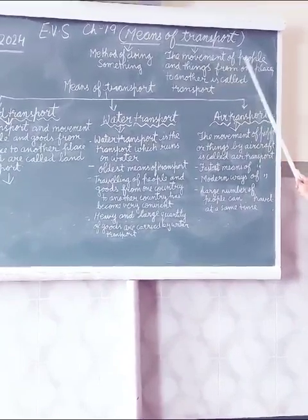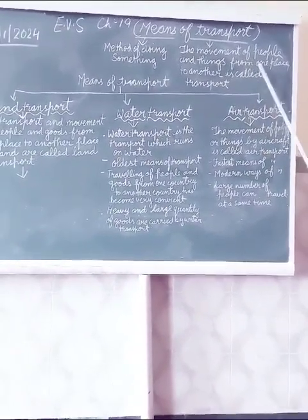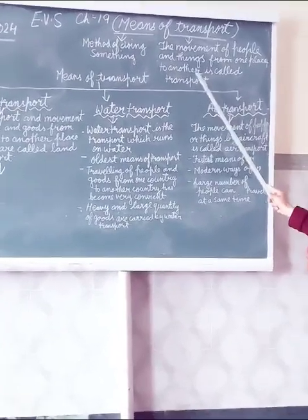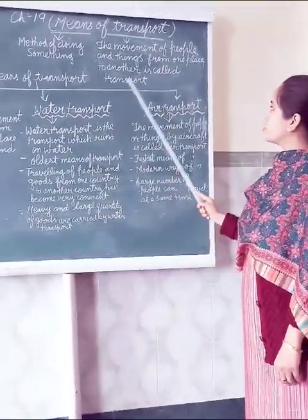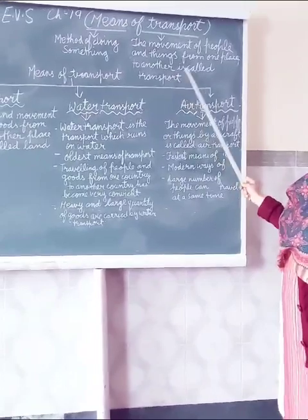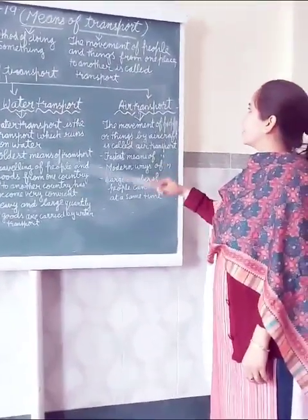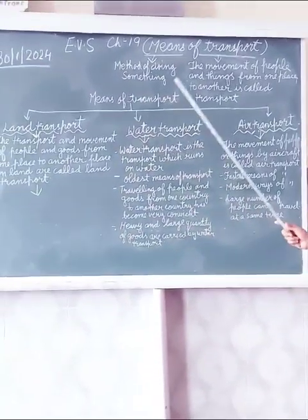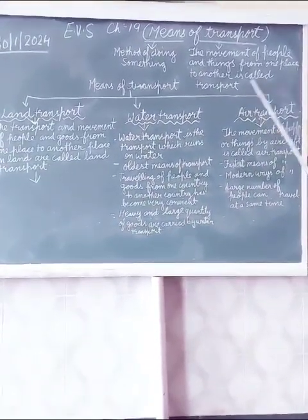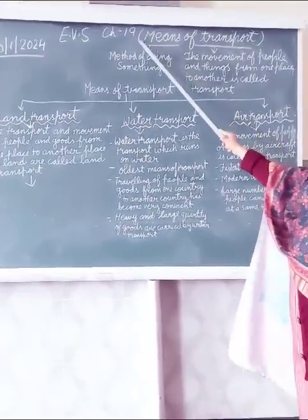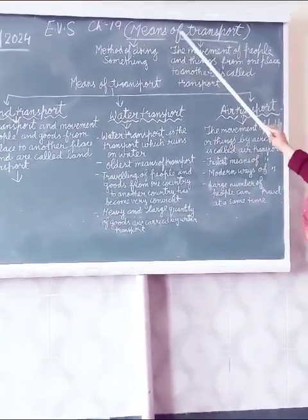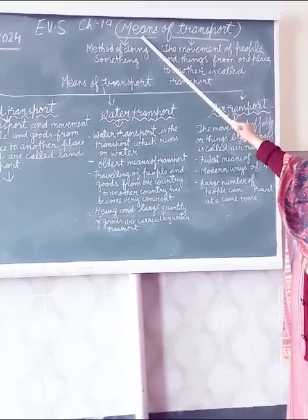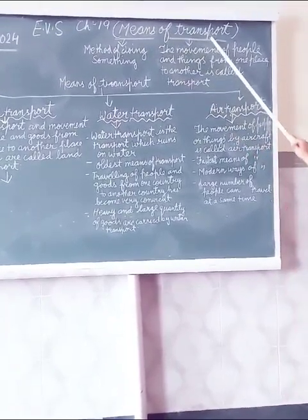Transport - the movement of people and things from one place to another is called transport. When we go from one place to another, or when we send goods from one place to another place, that movement of people or goods is known as transport. So this chapter is about means of transport - what are the methods of transport?